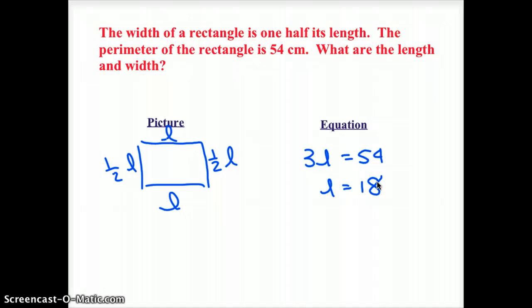Okay. So 18 is my length. Half of L, that's 9. 9 should be my width. If I check 18, 9, 18, and 9, it looks like I do get a perimeter of 54. So it looks like length is 18 centimeters, and width is 9 centimeters.